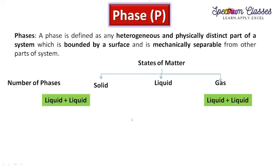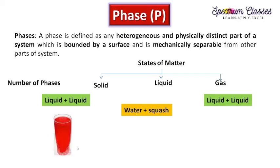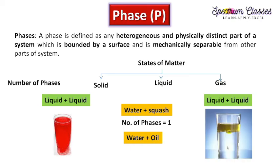For a liquid-liquid system: adding squash to water produces one phase — you cannot see two distinct layers. Adding oil to water gives two visible layers — water and oil — so it constitutes two phases. The inference: if two liquids are miscible, it constitutes one phase; if immiscible, it constitutes two phases.